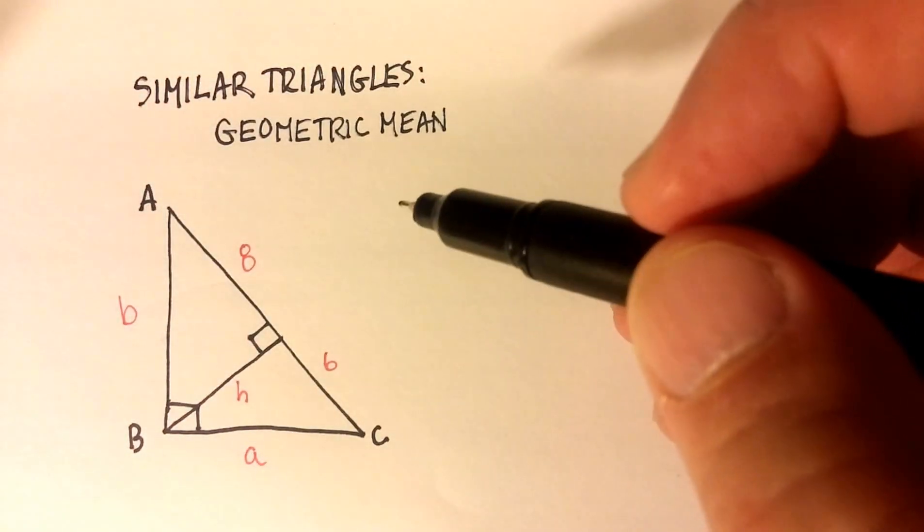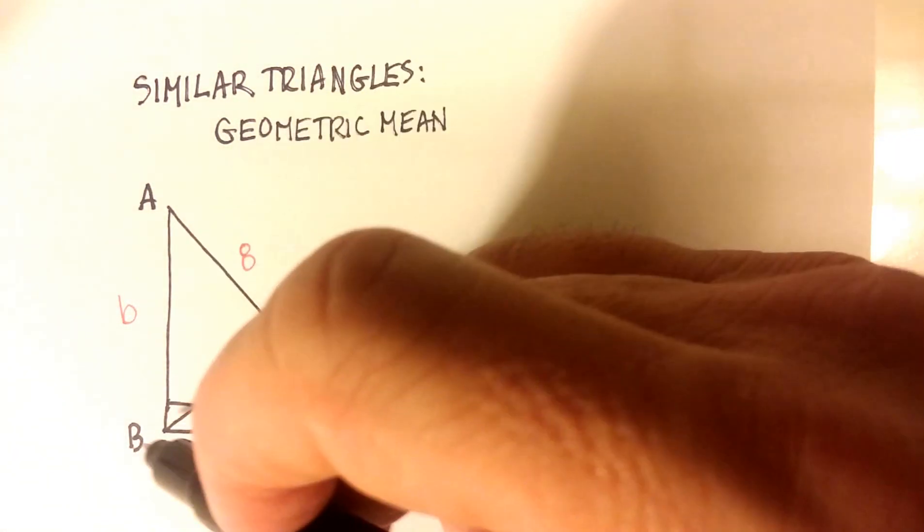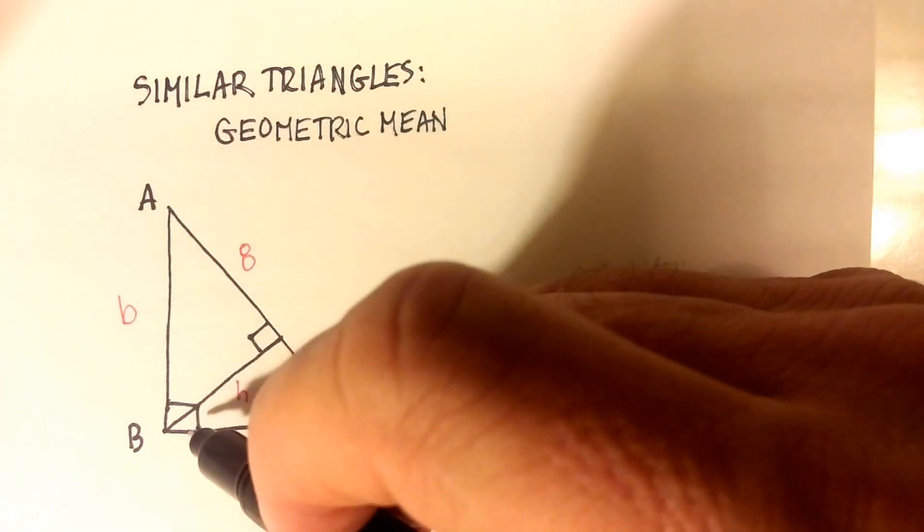You remember that in a right triangle, you have to have a 90-degree angle here. So here's this big triangle, we'll call it triangle ABC, has a right angle.